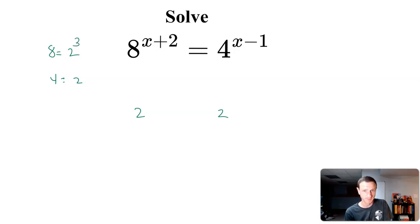So let's think about this. 8 is 2 to the 3rd: 2 times 2 times 2. 4 is 2 to the 2nd. So as I can rewrite these with the same base of the exponent, I'm going to go ahead and do that.